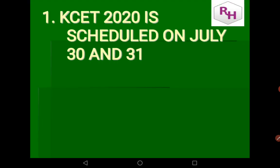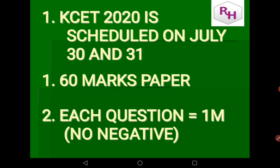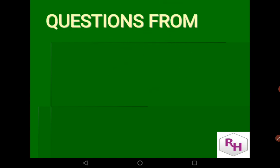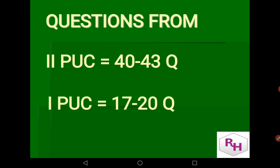KCET 2020 exam is scheduled on July 30th and 31st, with a 60-mark paper. Each question carries one mark and there is no negative marking. Questions generally come from the First PUC part (17 to 20 questions) and the Second PUC part (40 to 43 questions), making the Second PUC part more important.